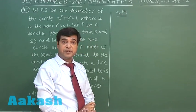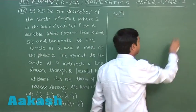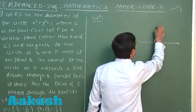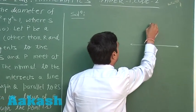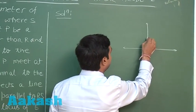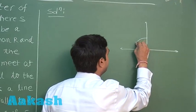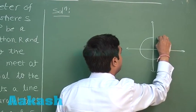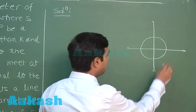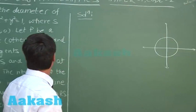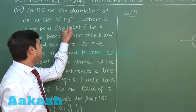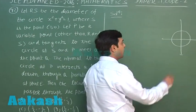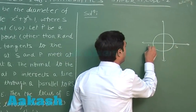This is a question from coordinate geometry. Drawing a circle centered at the origin with radius unity. It is given that RS is a diameter where point S is (1, 0). So clearly this point is S and this point is R.